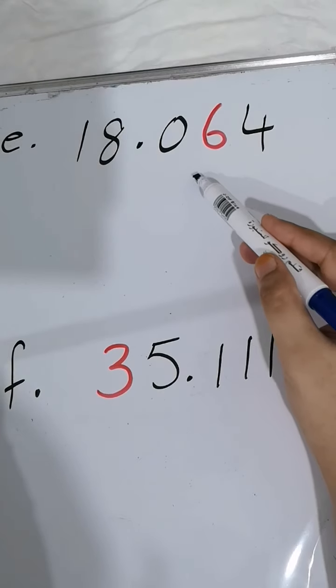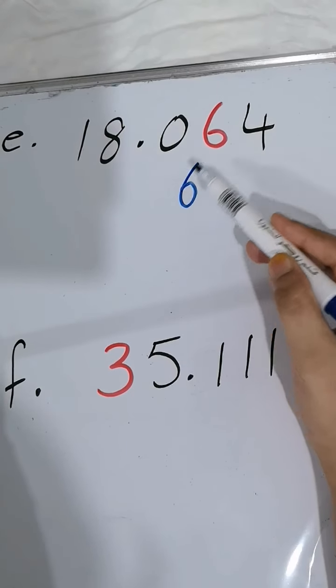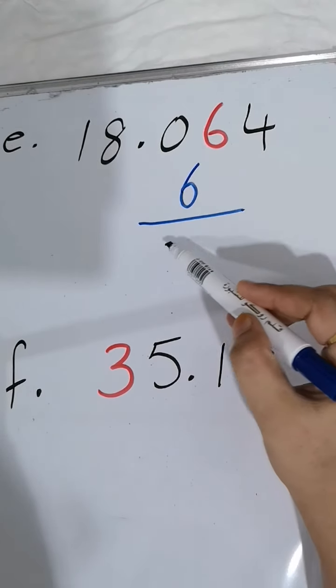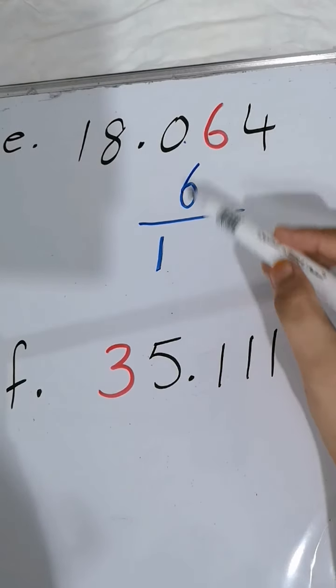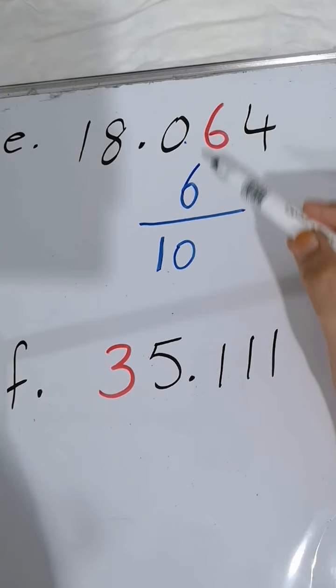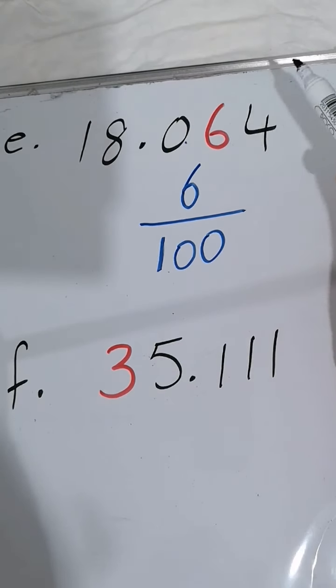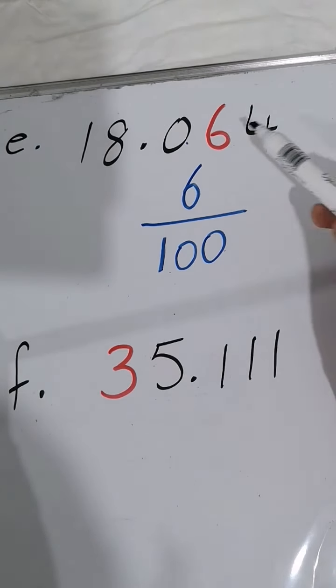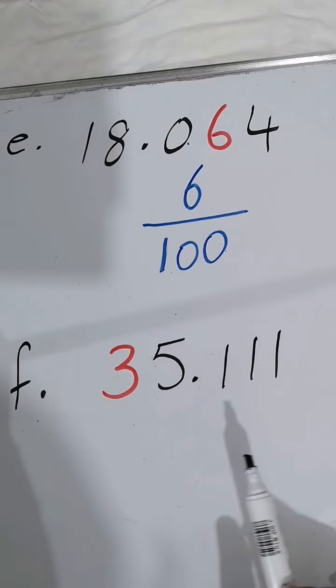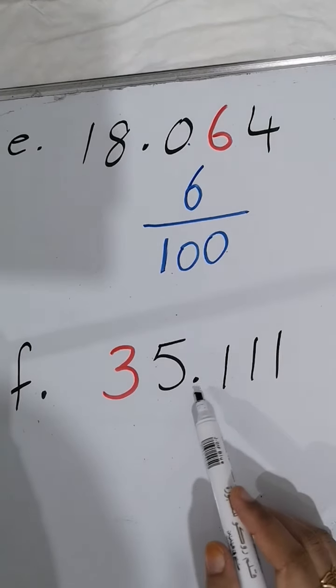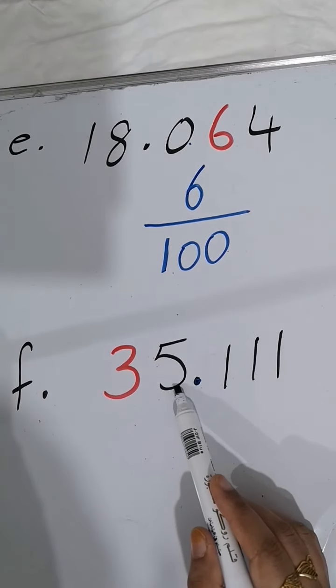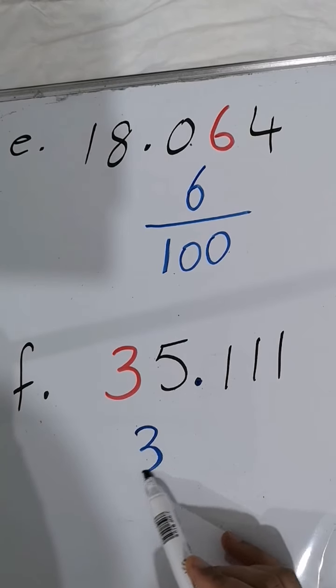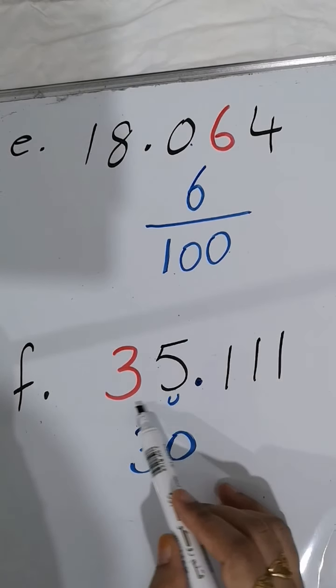The next part is 18.064. As I told you, for a number after the decimal, write the number on top as the numerator. At the decimal place 1, first number is 0, for the second... it's at the hundredths place, so the denominator is 100. This is the value of 6: 6/100. We count the units before the decimal, so it's 30 units and 10.